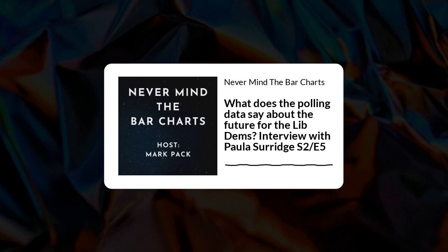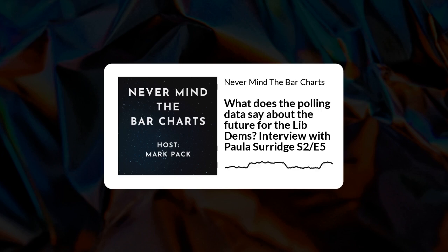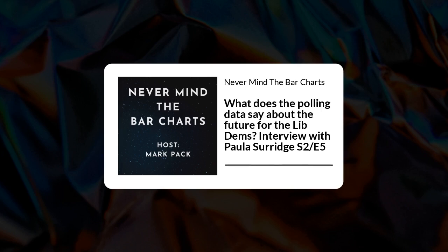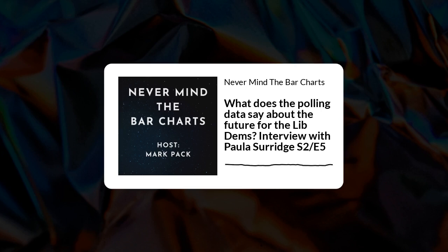If you plot the average positions on these scales of different groups of voters, I think 2019 is the first time the average position of Labour voters is more liberal than the average position of Lib Dem voters. I think that's because the Lib Dems were picking up liberal voters from the Conservatives, but those voters who are liberal within the Conservative spectrum are nowhere near as liberal as those who are liberal within the Labour spectrum.